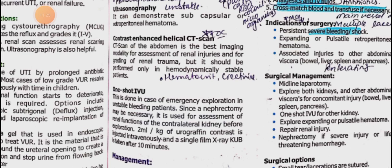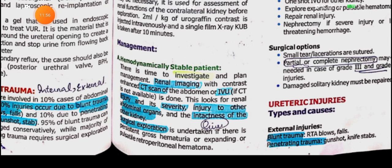CT scan is performed on hemodynamically stable patients. The third investigation is IVU (intravenous urography). In emergency exploration for unstable patients, IVU is used to assess renal function of the contralateral kidney before exploration. You inject 2 ml per kg of urographin contrast intravenously, then take an X-ray at 10 minutes.